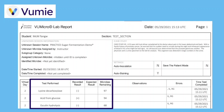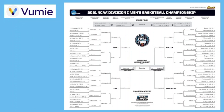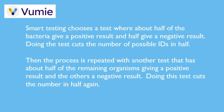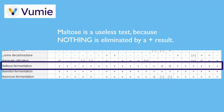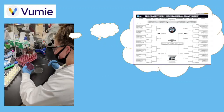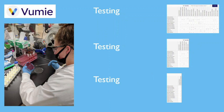Ideally, every test conducted would reduce the number of possible species in half, just as each round of the March Madness basketball tournament reduces the number of possible national champions in half. Smart testing reduces the number of tests needed to provide an identification. Doing tests that fail to eliminate anything is a waste of time and resources. The job of the microbiologist is to determine which tests are useful for skillfully reducing the number of possible identities until only a single name remains.